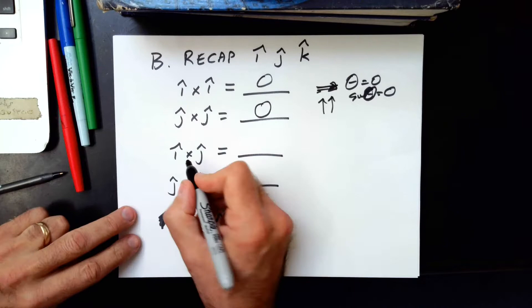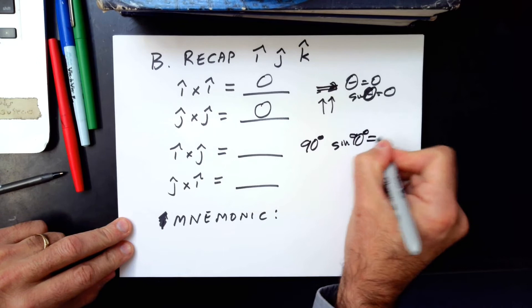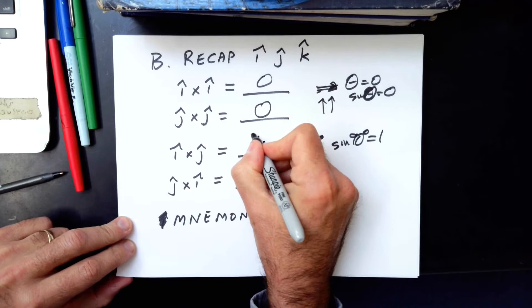For I cross J, you go I cross J like that, points out of the page. The angle is 90 degrees. The sine of 90 degrees is 1. So you have a vector with a length of 1, a vector with a length of 1, and sine of 90 degrees is 1. 1 times 1 times 1 is 1. And if you go like this, and it points this way, that points in the K direction.